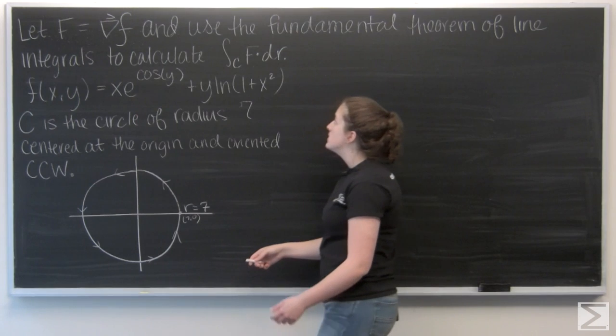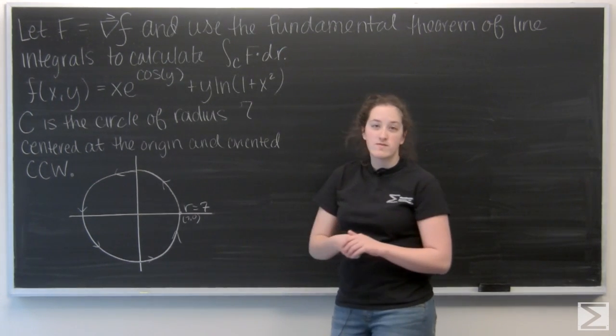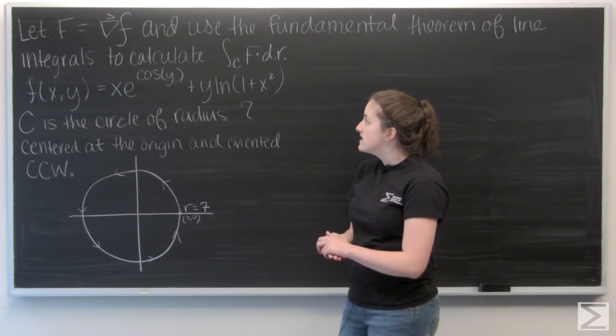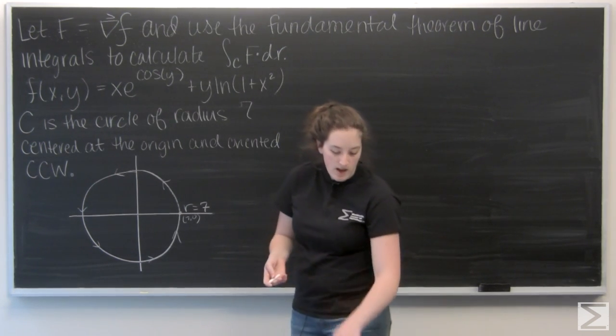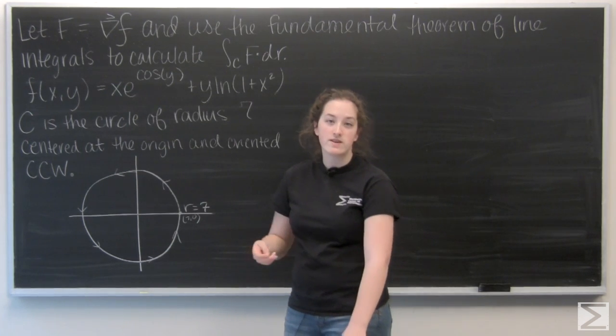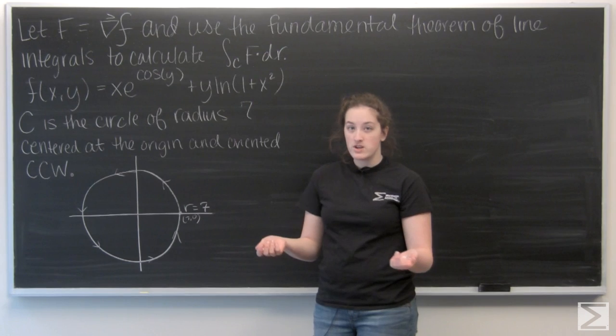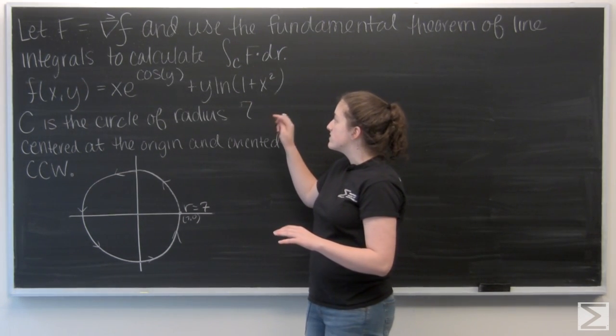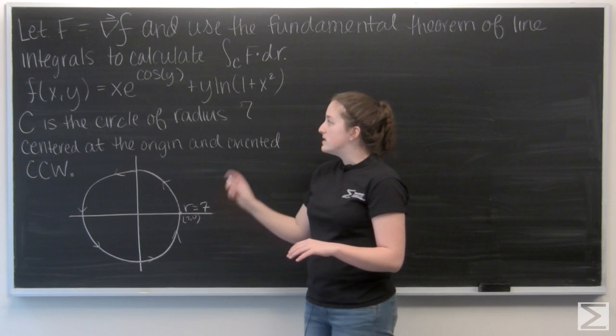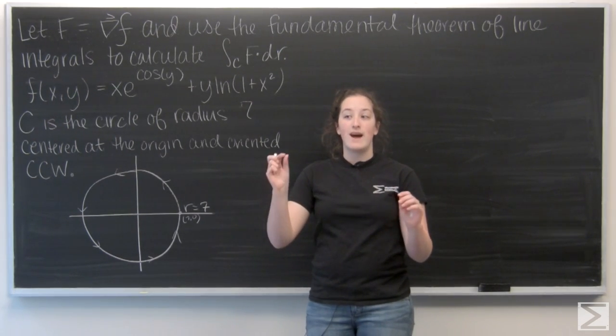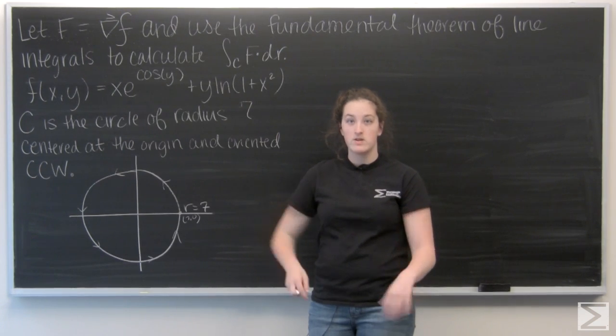So let's think about what the fundamental theorem of line integrals tells us. It says that if we're given a conservative vector field, which is just a vector field that's the gradient of some function, then the line integral over the curve C is actually just going to be the function value at the endpoint of the curve minus the function value at the start point of the curve.